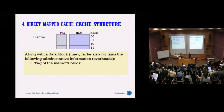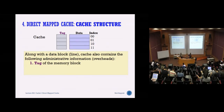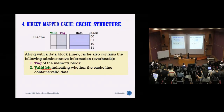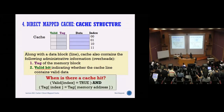The cache structure maps an address and also stores the data associated with that memory location. Each cache entry has a tag (the remaining upper bits) and a valid bit. The valid bit is important — it tells us whether the cache line contains valid data, meaning it has already been loaded with data from memory. If the valid bit is not set, you cannot read from that line. A cache hit occurs when the address you want is already in the cache and the valid bit is set.